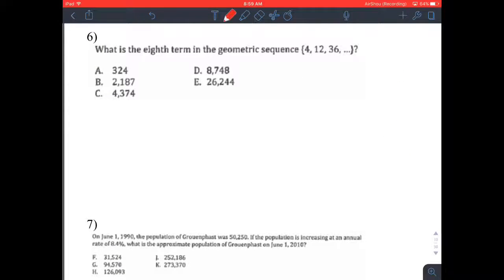Number 6. What's the 8th term in this sequence? We don't want to write out all these terms, so let's use the formula. a sub n equals a sub 1 times the rate to the exponent n minus 1.